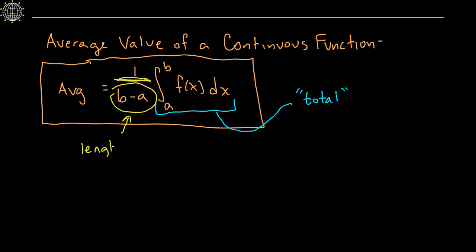Well, that's the length of the interval. Just think about it for a second. If your interval was from two to seven, wouldn't that have a length of five? From two to seven? And the way that you get that is you take seven minus two. So this is like you're totaling, and this is like dividing by the length of the interval.